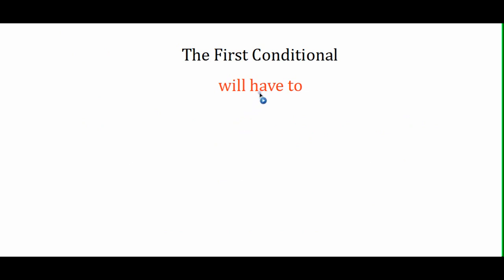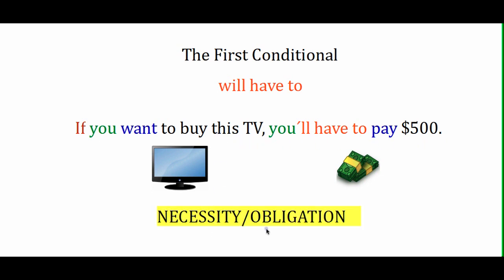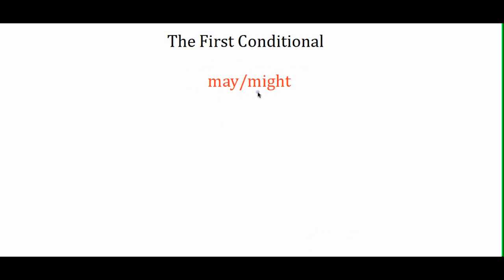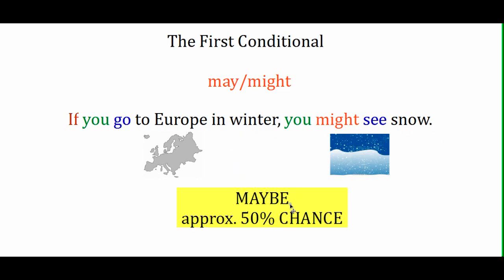Then we have 'will have to.' If you use 'have to' in conjunction with 'will,' for example: 'If you want to buy this TV, you'll have to pay $500' — that means it's a necessity or an obligation. Finally, if we use 'may' or 'might,' for example: 'If you go to Europe in winter, you might see snow,' this means it's a maybe — approximately a 50% chance.